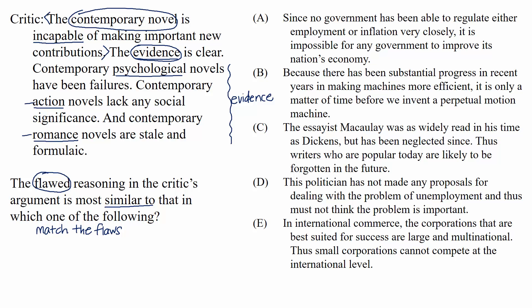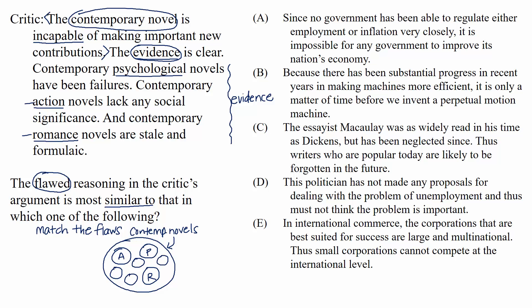To put it visually, let's say this circle represents all of the contemporary novels in the world. The smaller circles would be action novels, psychological novels, and romance novels. But they don't necessarily make up all contemporary novels in existence — there could be many other kinds we don't know anything about. Maybe they're huge successes. Furthermore, just because these listed types of novels have failed doesn't mean they need to keep failing. So there are two problems this argument exhibits.